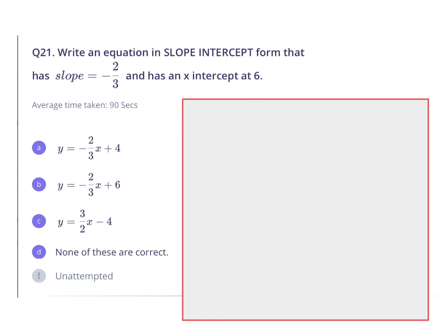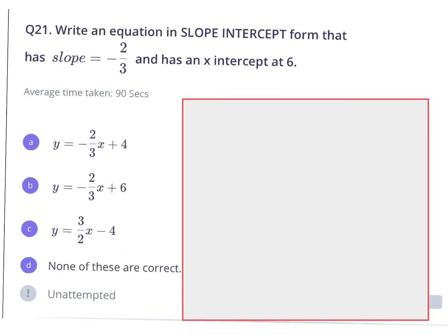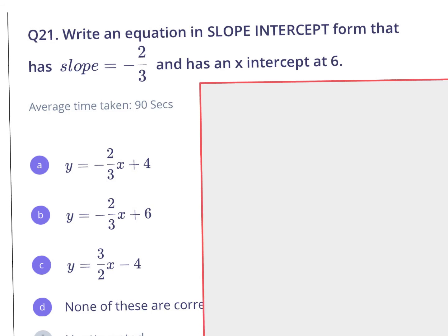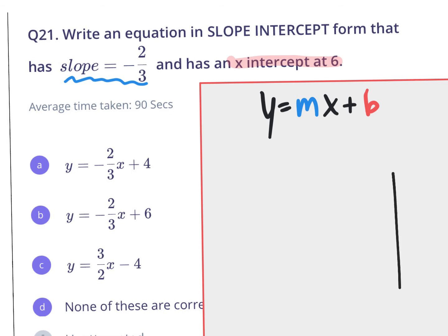Number 21 says write an equation in slope-intercept form that has a slope of negative 2 thirds and has an x-intercept at 6. They want slope-intercept form — y equals mx plus b — and they give us a slope. They also indirectly give us a point: if the x-intercept is at 6, that means the point is (6, 0) on the x-axis.